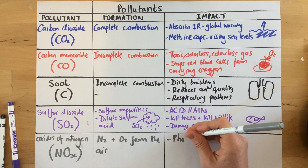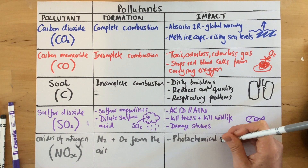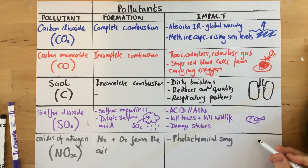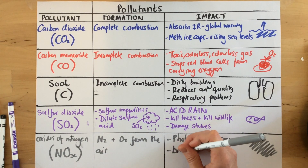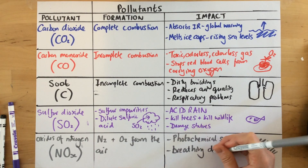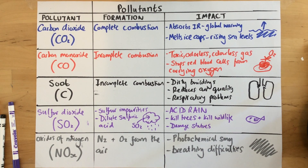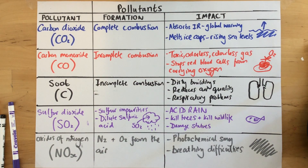The big problem associated with oxides of nitrogen is photochemical smog — a type of air pollution you may have seen in certain cities that looks a bit like fog. It can cause breathing difficulties and also affect visibility within cities. Those are the five pollutants we need to know about: their formation and the impact they have on the environment.